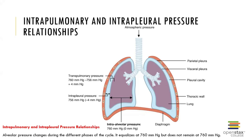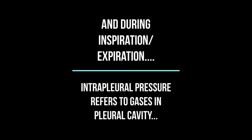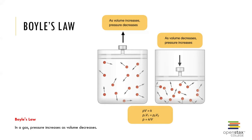Air flows from an area of higher pressure to lower pressure. During inspiration, the diaphragm contracts; during expiration, the diaphragm relaxes. This relates to Boyle's Law: volume is inversely proportional to pressure. As volume increases, pressure decreases; as volume decreases, pressure increases. If the volume of the thoracic cavity is reduced by half, pressure doubles; if volume doubles, pressure declines by half.